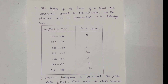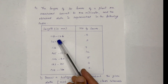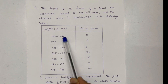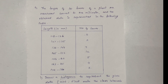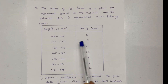Question number four: the length of 40 leaves of a plant are measured correct to one millimeter, and the obtained data is represented in the following table. The length of a leaf measure — you can calculate the number of leaves. For the range 118 to 126 millimeters, there are 3 leaves in the plant.